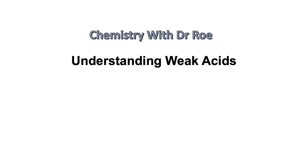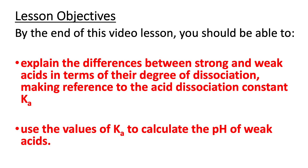Welcome to our latest video on understanding weak acids. This video is suitable for A-level students. By the end of this video lesson, you should be able to explain the differences between strong and weak acids in terms of their degree of dissociation, making reference to the acid dissociation constant Ka, and you should be able to use the values of Ka to calculate the pH of weak acids.